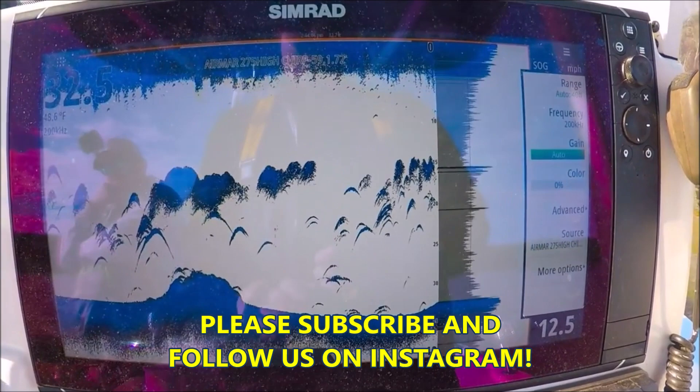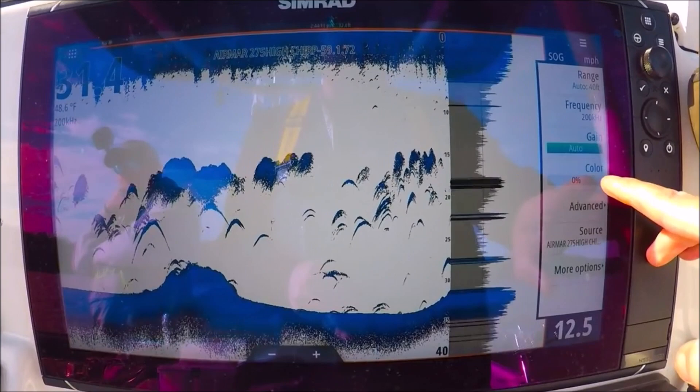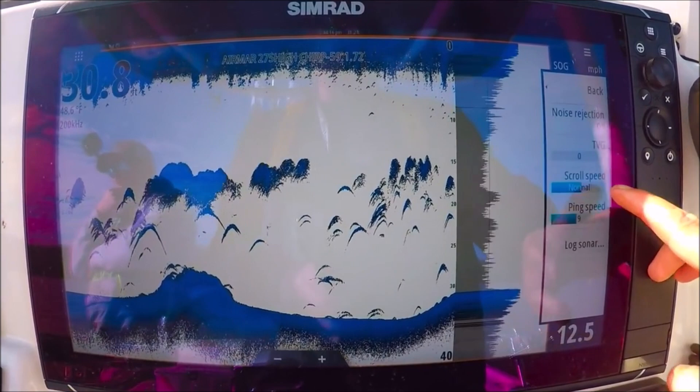Alright guys, I want to take a minute and show you how I set up my echo sounder, my NSS evo3. I like to start by putting my gain on auto, my color at zero.